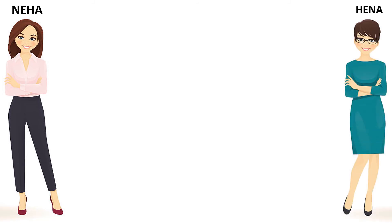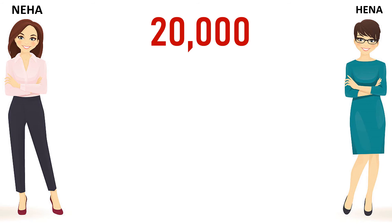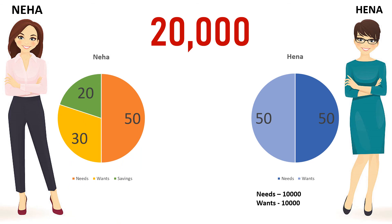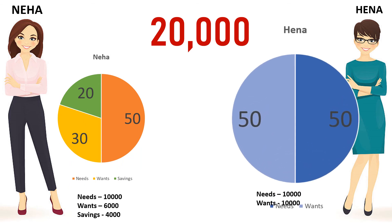Suppose Neha and Hannah have the same income throughout the year, which is 20,000 rupees. Hannah is using 10,000 for her needs and 10,000 for her wants. Her wants are increasing day by day, so she is not able to save money — this will be a problem for Hannah. Neha, on the other hand, uses 10,000 for her needs, 6,000 for her wants, and 4,000 for her savings. Sticking to the 50-30-20 rule makes it easier to stay on track to reach your financial goals.